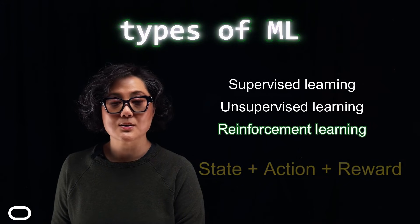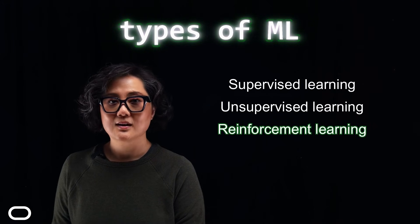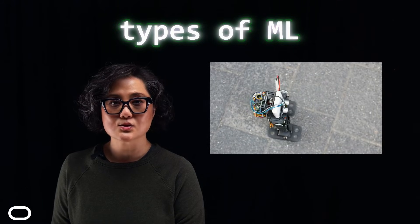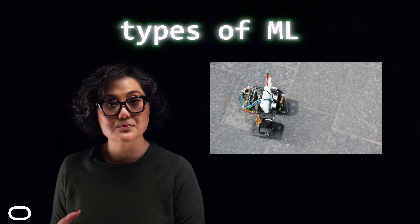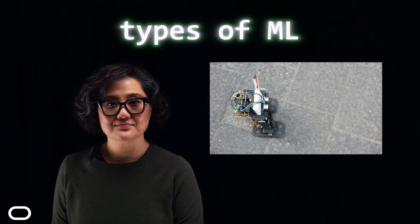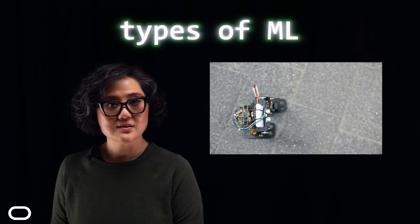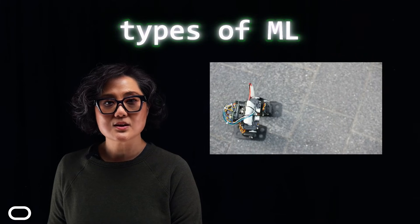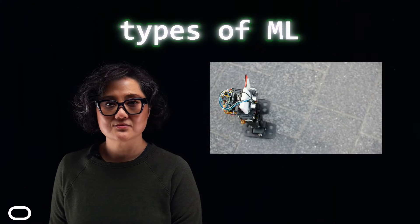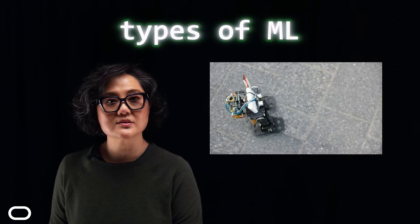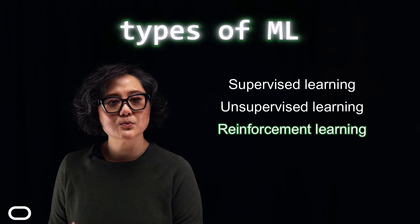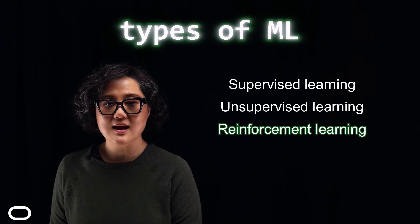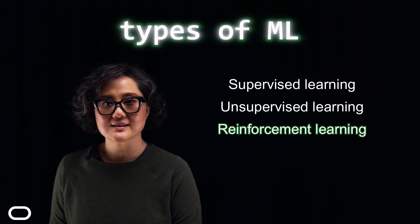The state describes the current situation. For a robot learning to walk, the state is the position of its two legs. An action is what an agent, or in this case the robot, can do in each state. Given the state or position of its two legs, a robot can take steps within a certain distance. There are only a certain number of finite actions that robot can take.